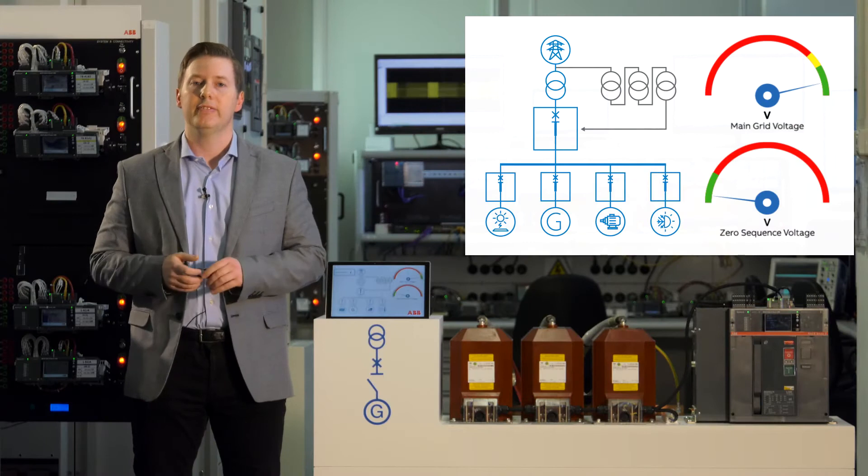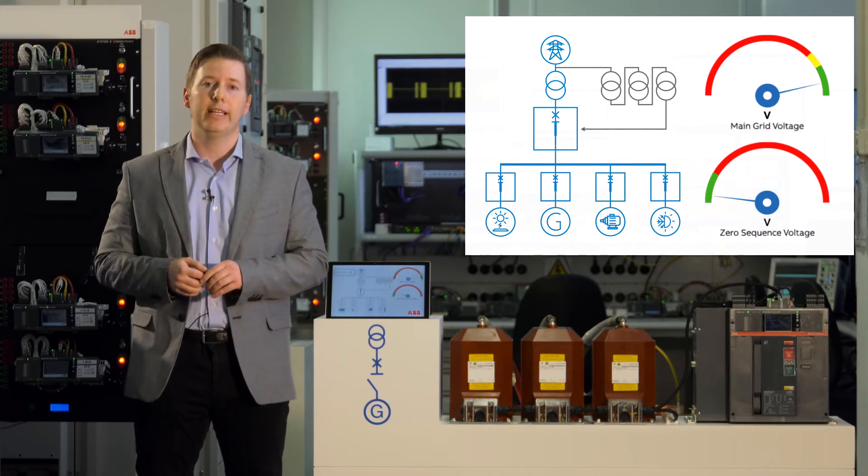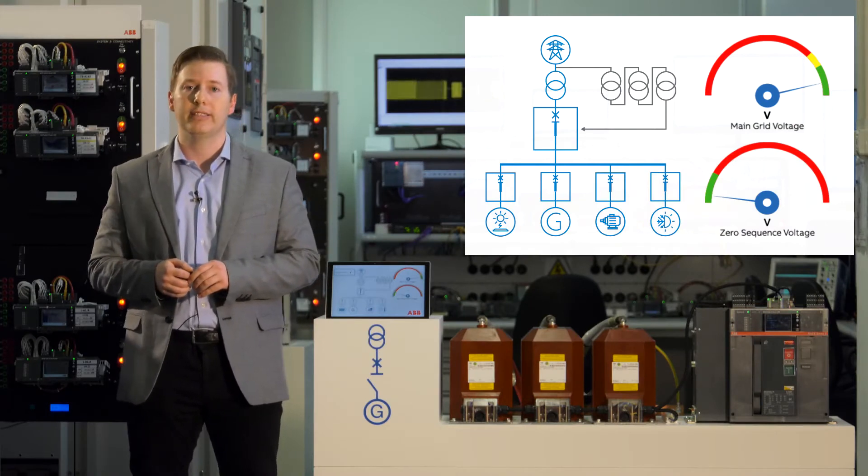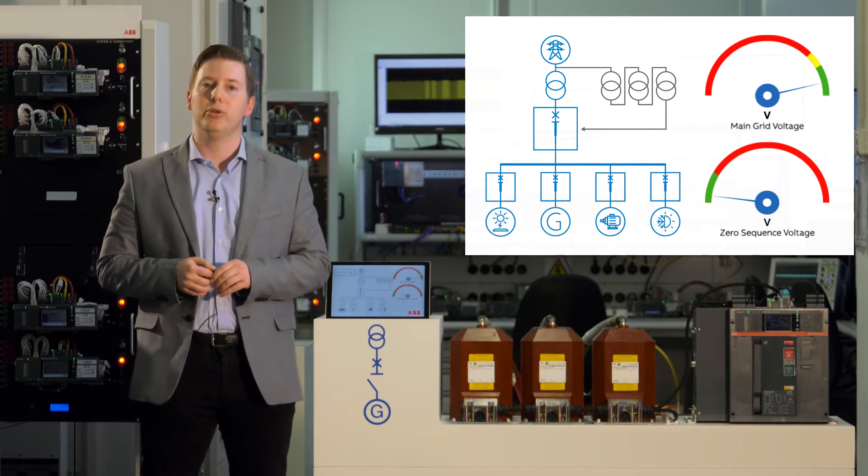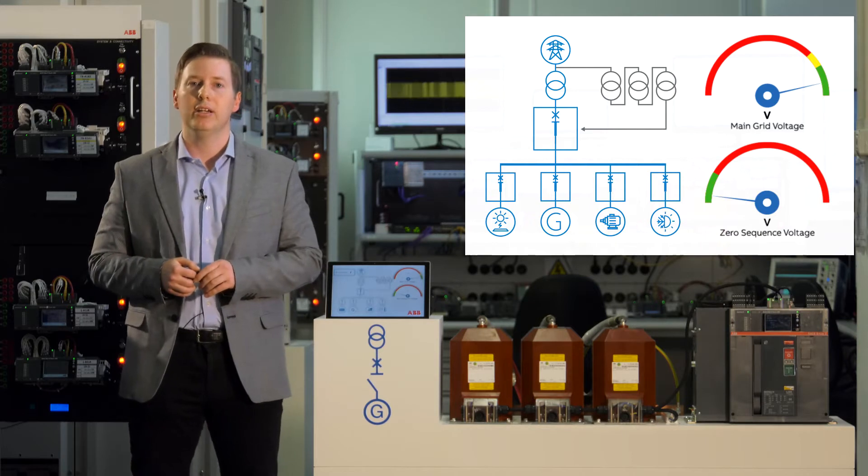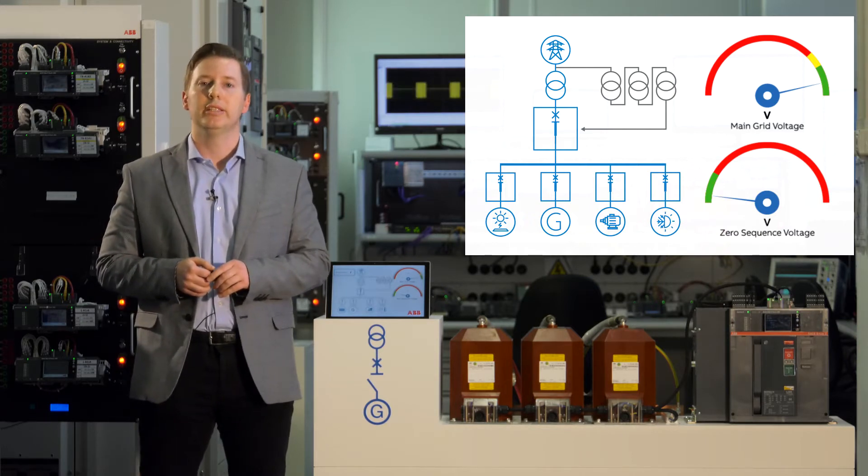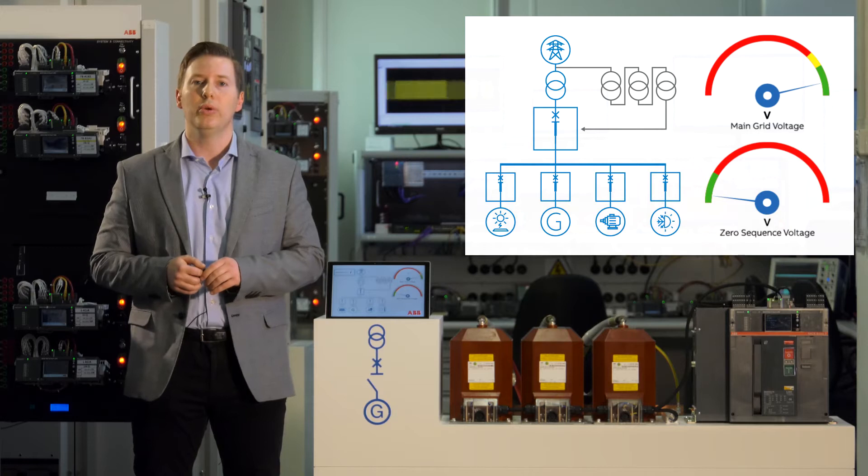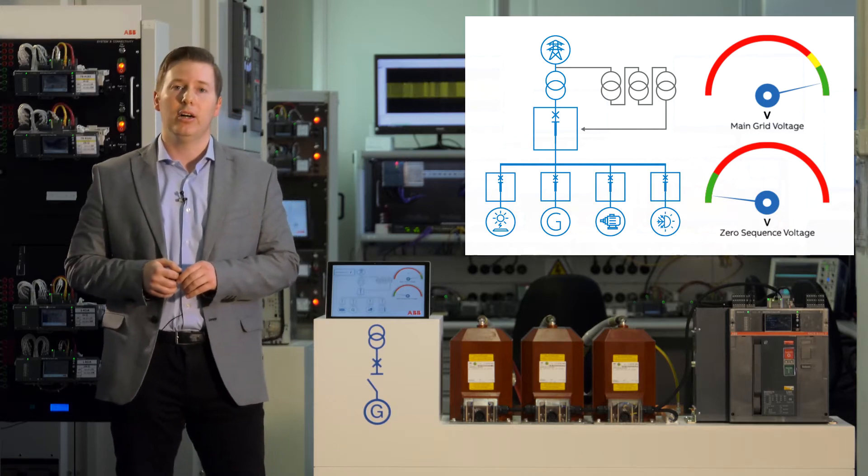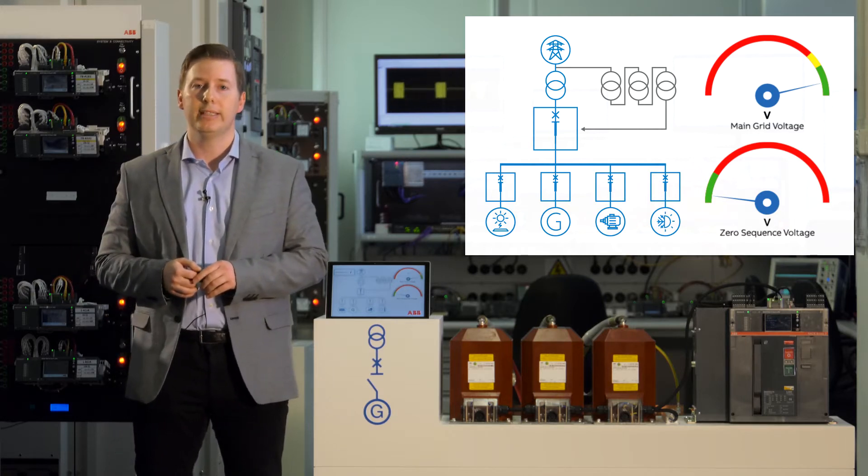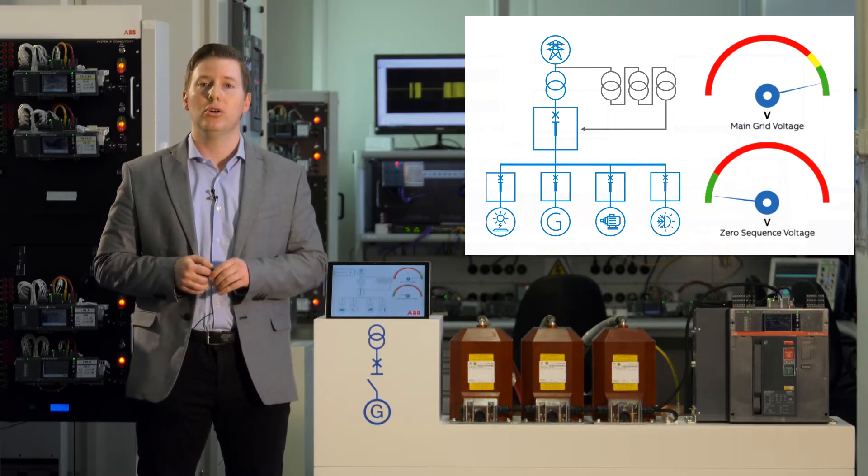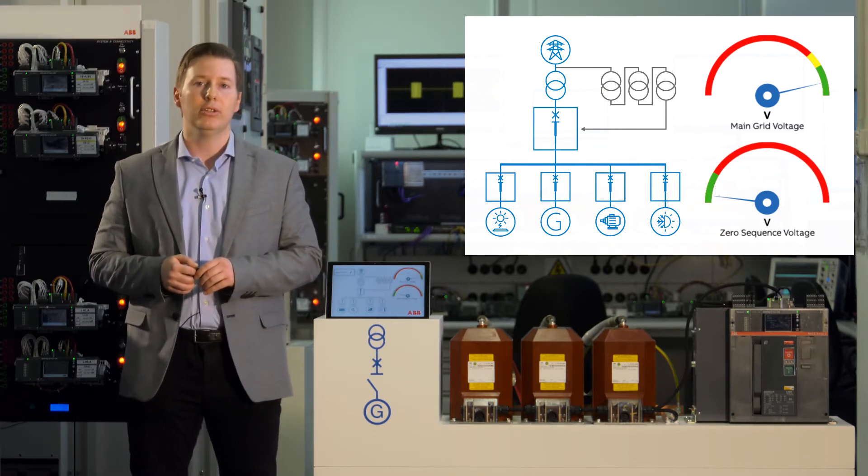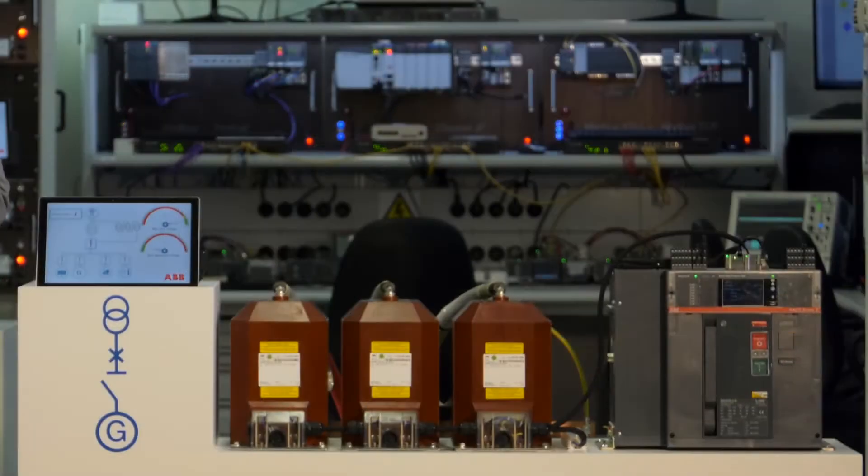This advanced feature is possible thanks to the implementation of several interface protections inside our Ekip Hi-Touch trip units installed directly on our EMAX2 circuit breaker. We have a complete set of under-over frequency and under-over voltage protections and the so-called voltage shifting in order to change automatically the frequency threshold.